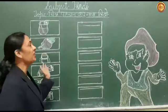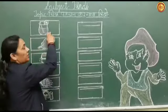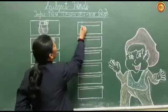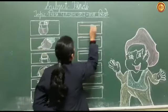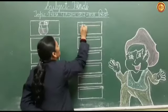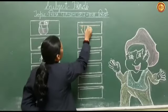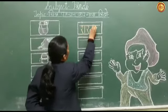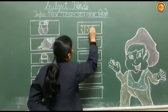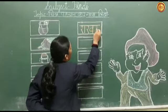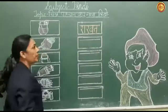Now we will write their names in front of them. So this is the picture of शर्वत — तो हम यहाँ लिखेंगे शर्वत. शर्वत, शर्वत.